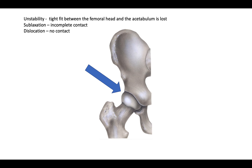Developmental dysplasia of the hip is slightly more common on the left side, and 20% of cases are bilateral.